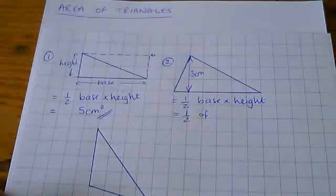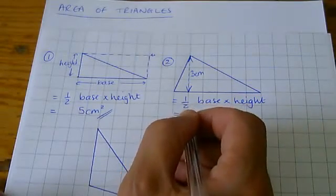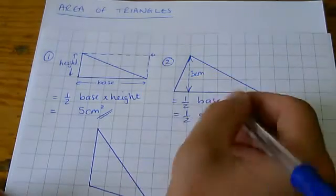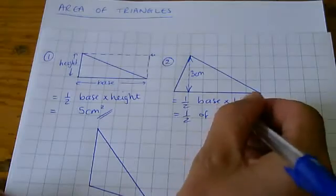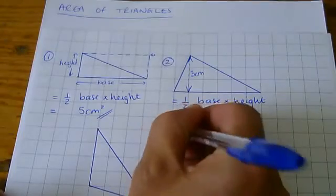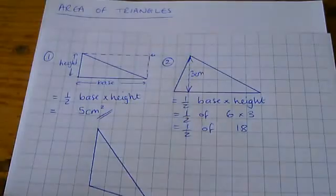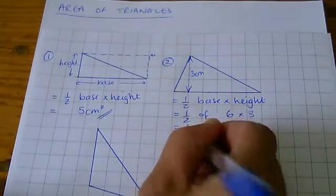And the height is 3 centimeters. So, I'm going to need to do half of base times height, which is that, 6 times 3. 6 times 3 is 18, and a half of it is 9.